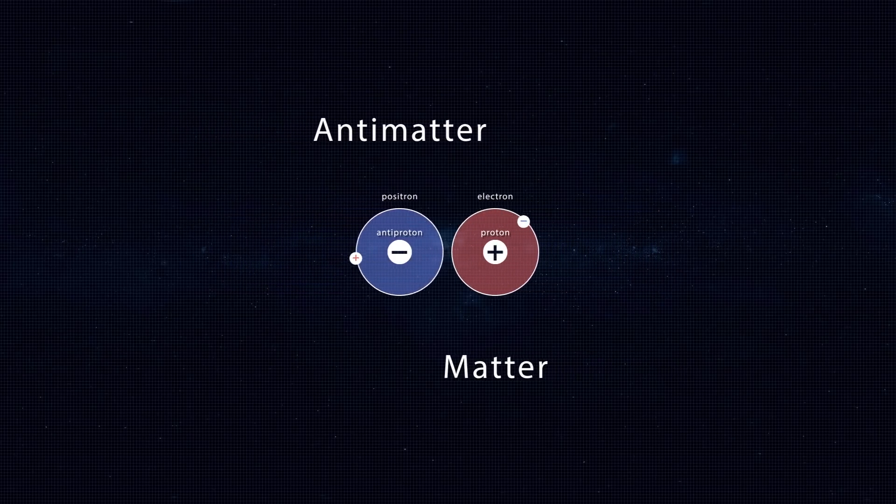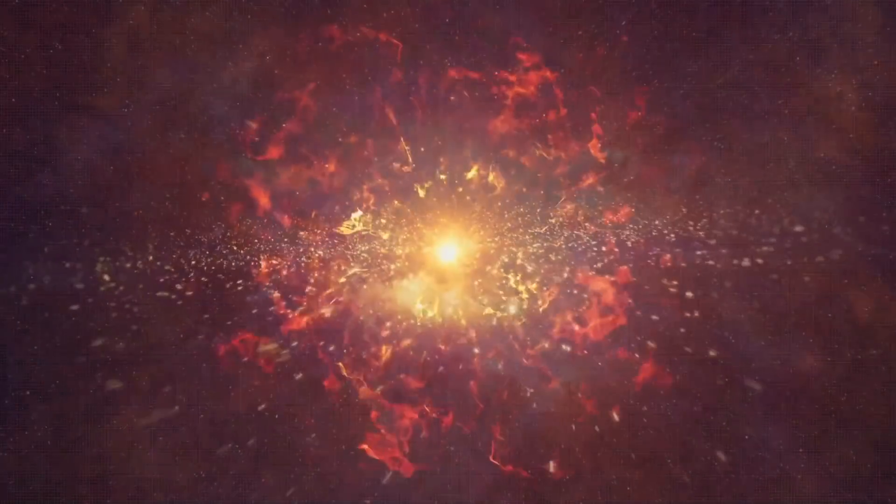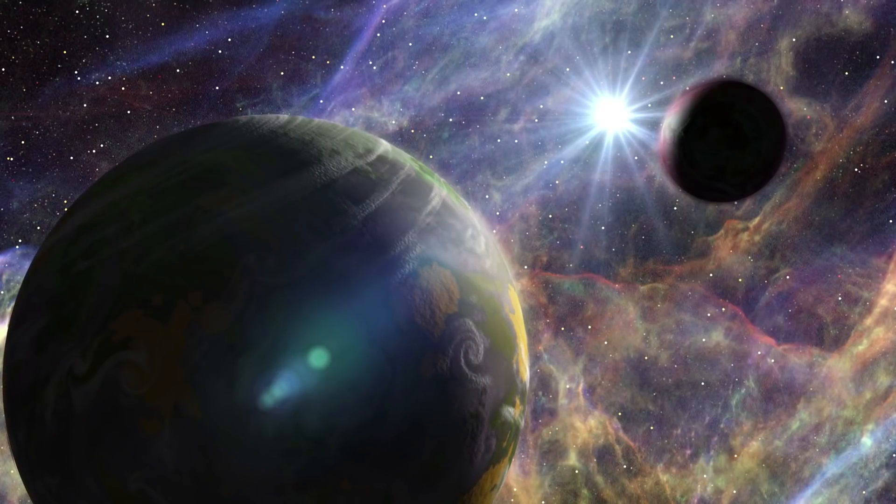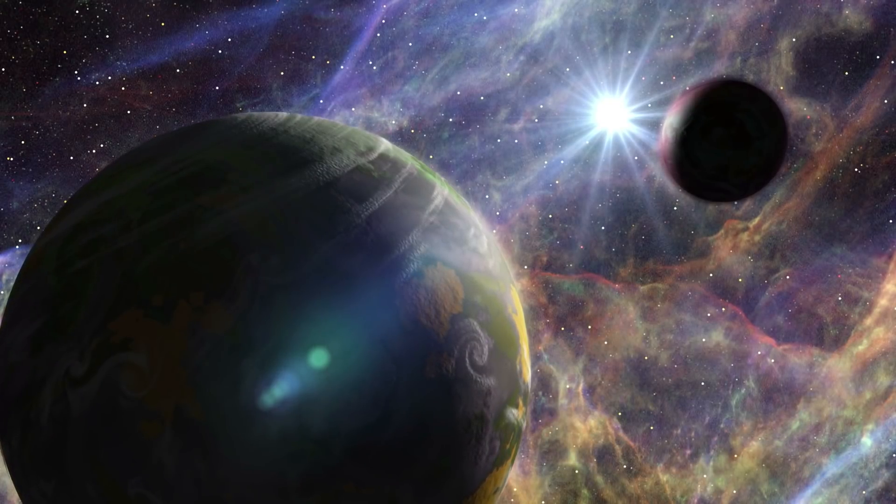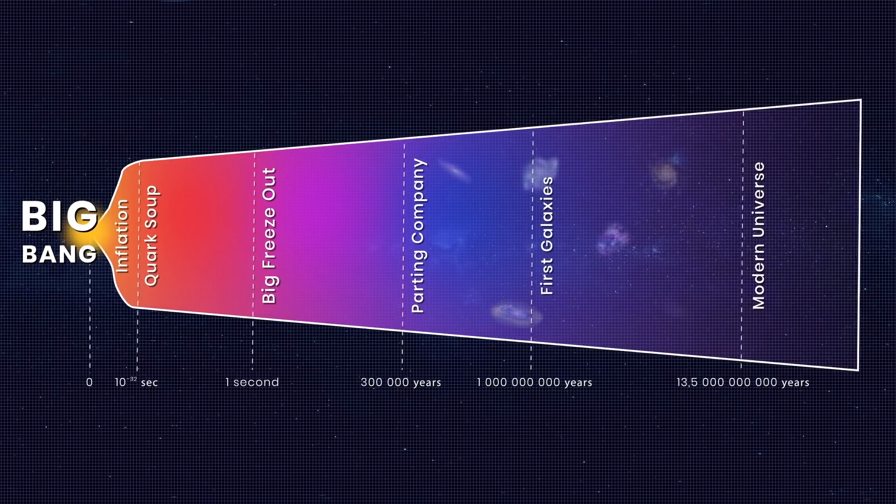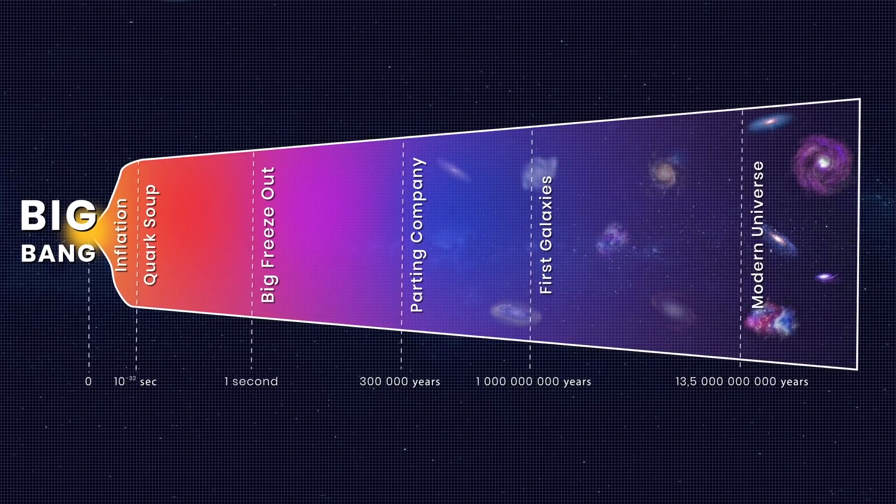But the catch is that matter and antimatter do not tolerate each other. On contact, they annihilate. But then, as we said above, the universe would simply not exist. But since you're watching this video, it still exists, and is not going to explode, at least not for the next couple of billion years. So where did the antimatter go, which should have been formed after the Big Bang in the first moments of the existence of our universe?